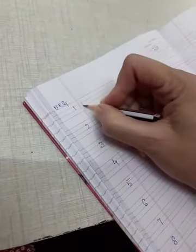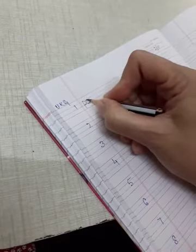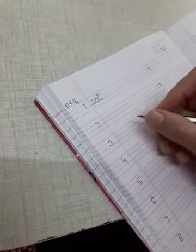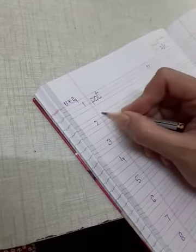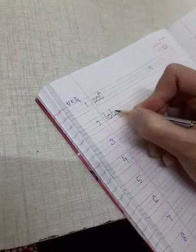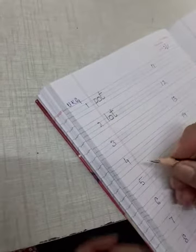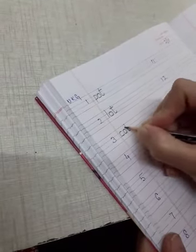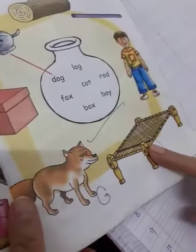On number 1 we will write P-O-T pot. What is pot? Bhartan. L-O-T lot. Lot kya hota hai? Bahot saara. K-O-T cot. I showed you the picture of cot. This is a cot.